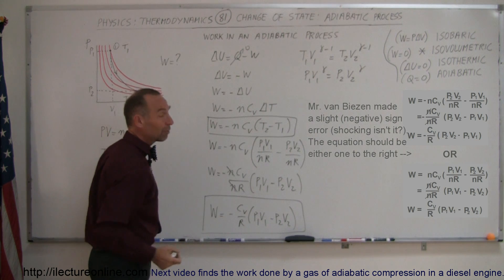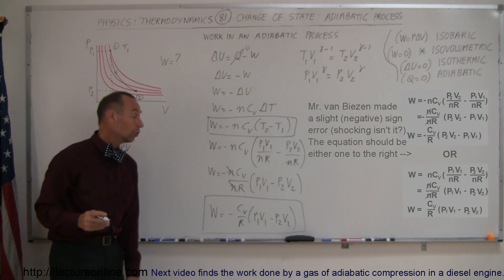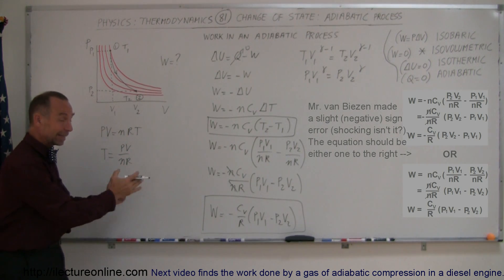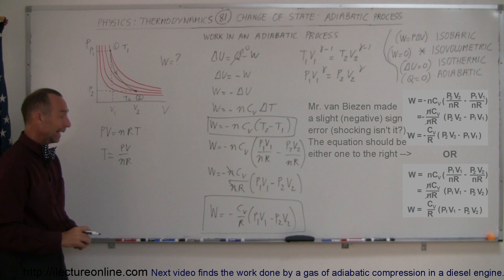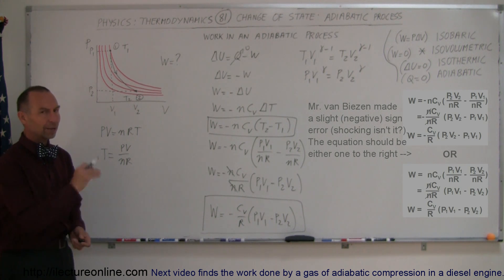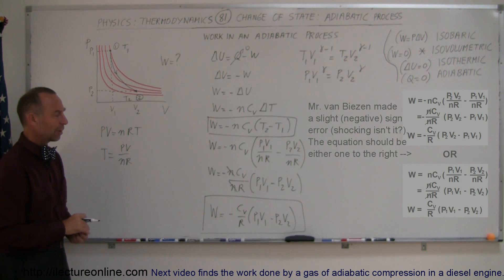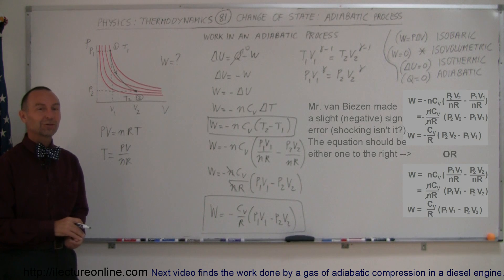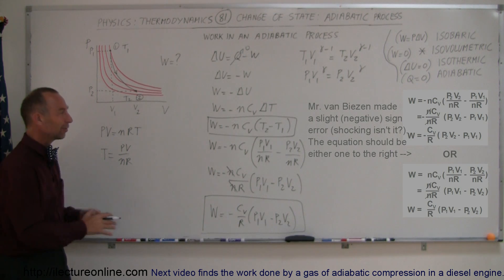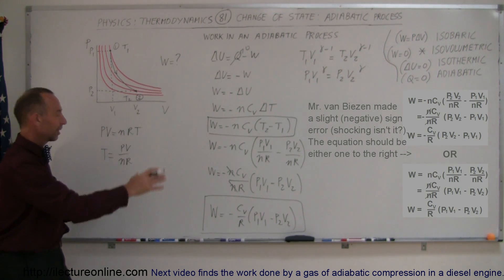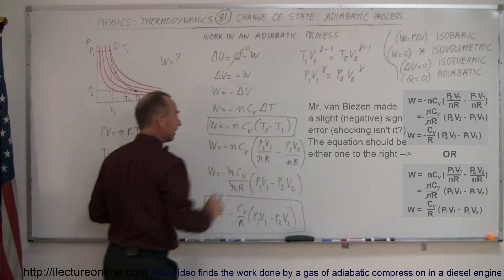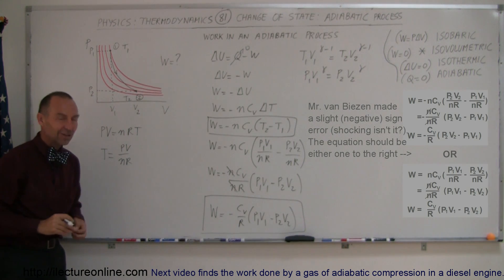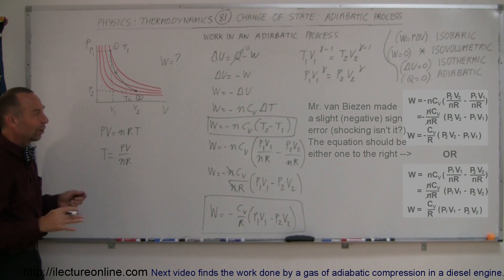In other words, if you don't know what the temperatures are but you do know the pressures and volumes, that formula is another way to find the work done in an adiabatic process. As promised, let's now look at some examples of how to utilize these equations — it's actually not as bad once you start seeing how they're applied.